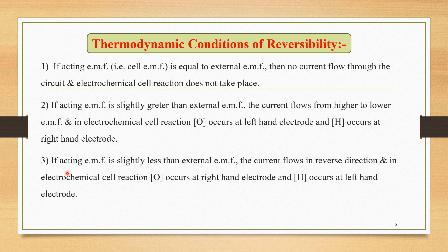The third important condition of reversibility is: if the acting EMF is slightly less than the external EMF, the current flows in the reverse direction, and in the electrochemical cell reaction, oxidation occurs at the right-hand electrode and reduction occurs at the left-hand electrode. These are the three important thermodynamic conditions of reversibility.